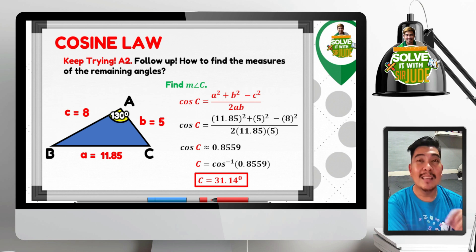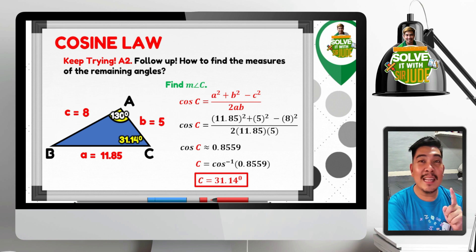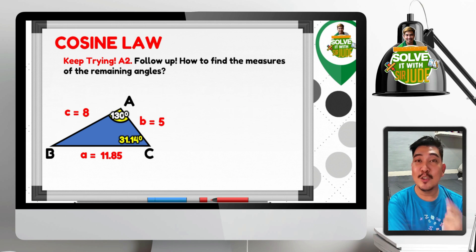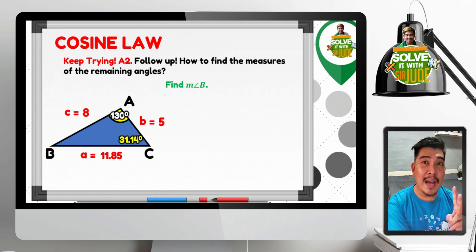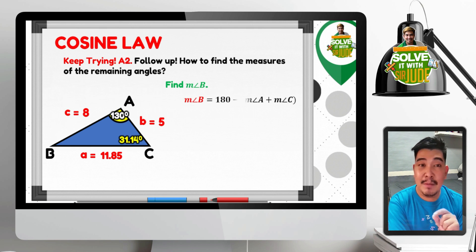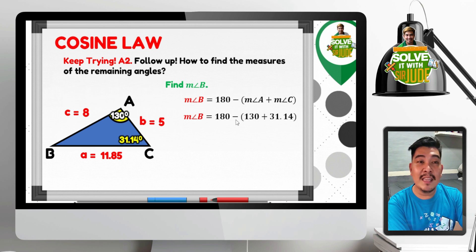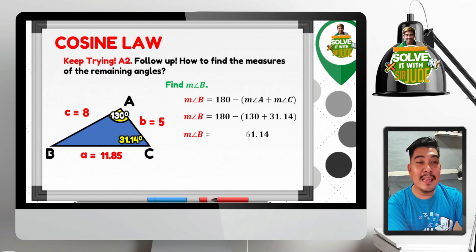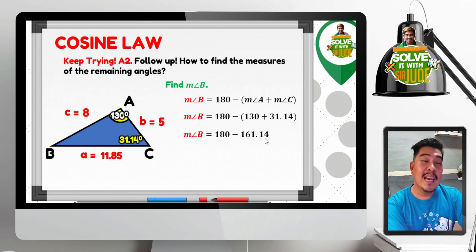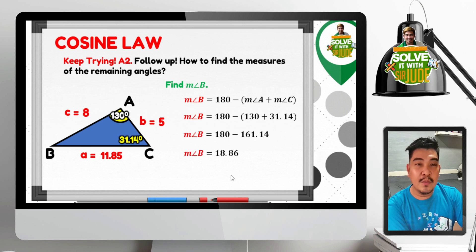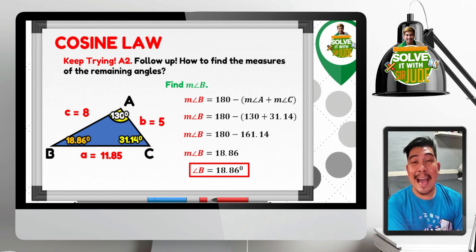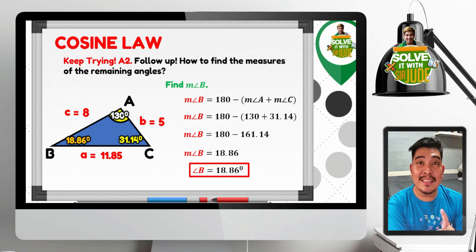To find angle B, since we now have two of the three angles, we subtract their sum from 180 degrees. So angle B equals 180 minus the sum of 130 and 31.14 degrees. That sum is 161.14, so angle B equals 180 minus 161.14, which is 18.86 degrees. To verify, add all angles — they must sum to 180.